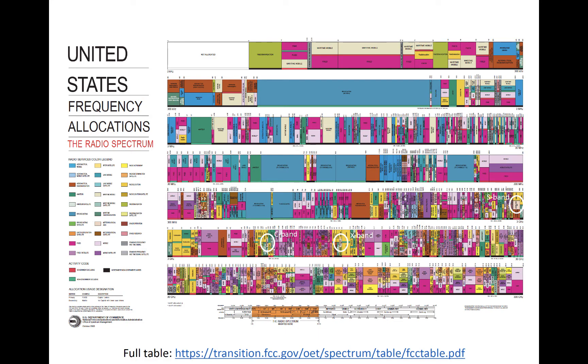This busy figure shows different allocations within the radio and microwave part of the spectrum. Each color represents a different type of allocation, which you can see by zooming in on the figure in your set of slides for this video over here on the left side. The full text table of the allocations can be found at the link below the figure.